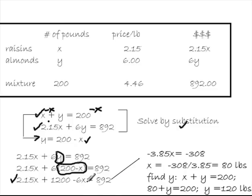Notice now I have an equation, a linear equation in only one variable, and I'm pretty good at solving those. I combine my like terms. 2.15 minus 6 is negative 3.85. And then I take the plus 1,200, and I move it over to the 892 by subtracting 1,200. And I wind up with negative 308 equals negative 3.85X. Solving this linear equation, divide both sides by negative 3.85. I wind up with X is 80.